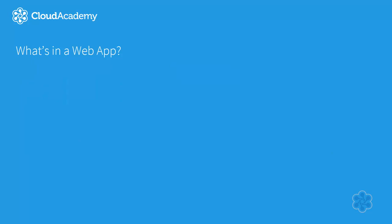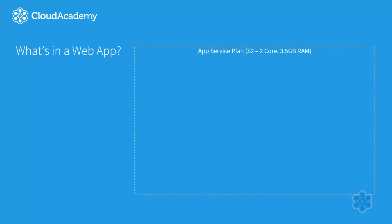So what's in a web app? Now that we understand what our app service plan is, let's talk about what web apps are. Starting with our app service plan — an app service plan is a virtual machine at its root. Within that virtual machine, our application code is deployed into IIS. Web apps provide other features and resources to use, such as app settings, which allow us to configure settings per application, and web jobs, which allow us to execute background processing operations at scale.